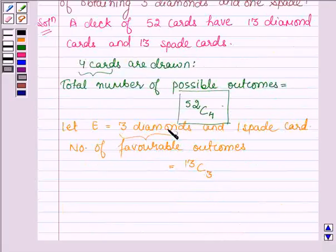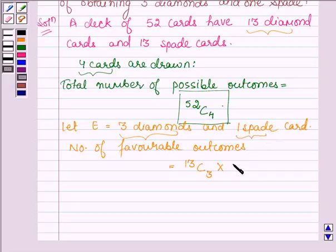Since 3 diamond cards are drawn and there are 13 diamond cards in a deck of 52 cards, and 1 spade card is also drawn, we have 13C1. Since there are 13 spade cards and out of these 13, the possible number of favorable outcomes are 13C1.